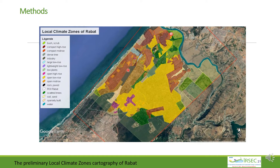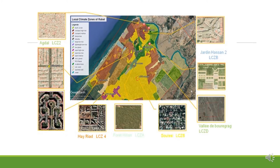LCZ zones of Rabat City are digitized in Google Earth and a preliminary LCZ cartography is produced. To validate this classification, stratified random sampling with a condition of minimum separating distance between sample sizes is used to design the areas for simulation. The LCZ classes represent the chart strata in this case, and the margin of error of sample size is calculated with a confidence interval of 99%.